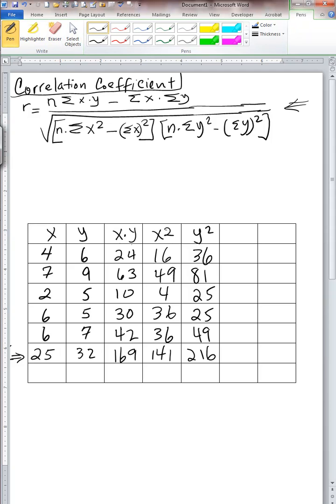So r is equal to n, which is 5, times summation of x times y column, which is 169, minus summation of x times the summation of y, 25 times 32. If you remember when we computed the simple regression equation, we found this to be 845, and this next term to be 800. So essentially for the numerator, we have computed 45.